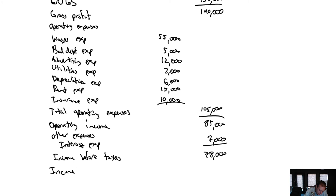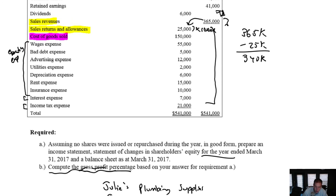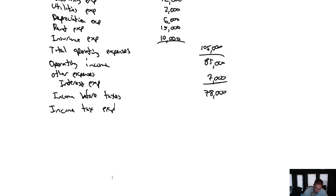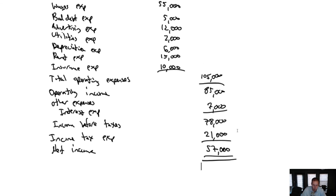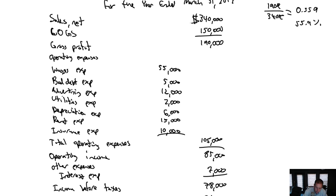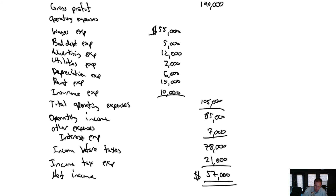Our income tax expense was $21,000. So our net income is $78,000 minus $21,000, which is $57,000 — that is our profit for the period. This is quite a long income statement. Dollar signs go at the top of each column and by the bottom line of the statement. This company was profitable — it's hard to say if it was a good or bad year without context, but we certainly made money: $57,000 for the year.